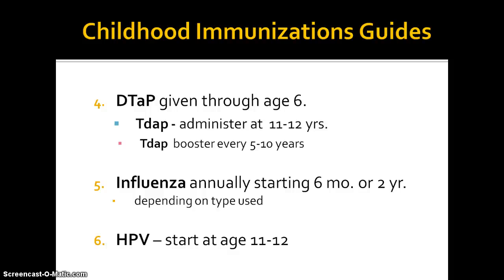The DTAP vaccine — diphtheria, tetanus, and acellular pertussis — is the one given through age six for those diseases. After age six, we switch to the Tdap vaccine. This is recommended with the first dose at age 11 to 12, and a Tdap booster every five to ten years after that. The influenza vaccine is annual; depending on which type, it can be started at two years of age or the other type at six months of age. The human papillomavirus vaccine, HPV, to prevent cervical cancer can be started at ages 11 or 12.